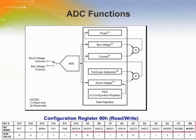When the INA219 is in normal operating mode, it continuously converts the shunt voltage up to the number set in the shunt voltage averaging function. The device then converts the bus voltage up to the number set in the bus voltage averaging. The mode control in the configuration register also permits selecting modes to convert only voltage or current, either continuously or in response to an event. All current and power calculations are performed in the background and do not contribute to conversion time.